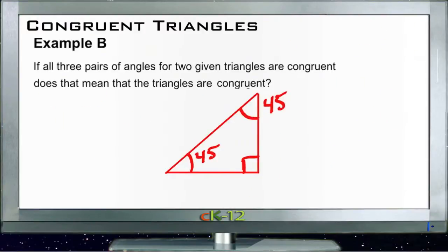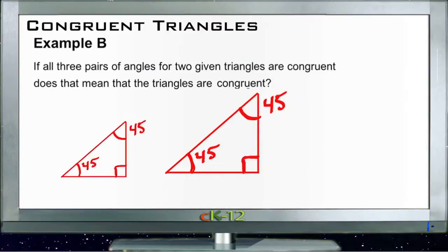Example B asks: if all three pairs of angles for two given triangles are congruent, does that mean the triangles are congruent? We might think that if another triangle also has 45 degrees on the lower left, 45 degrees on the top right, and 90 degrees in the lower right, then yes, they'd be congruent. But that's not necessarily true — this new triangle has exactly the same angles as the original, but it's obviously much smaller.